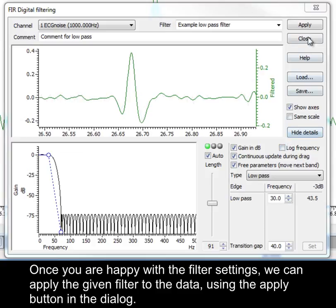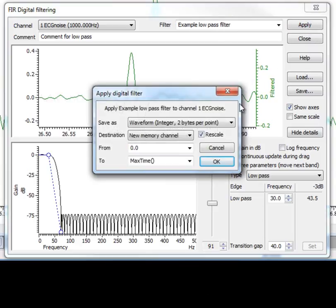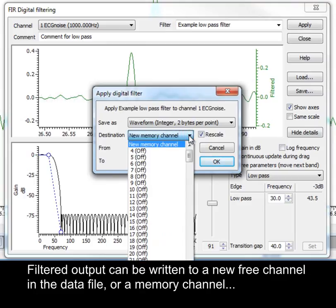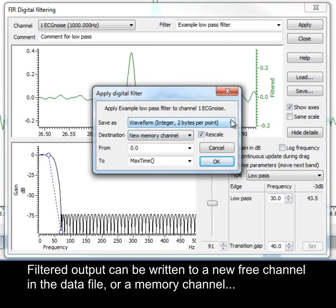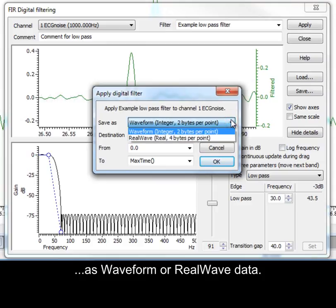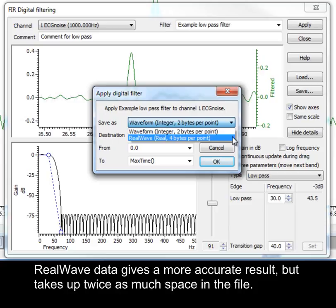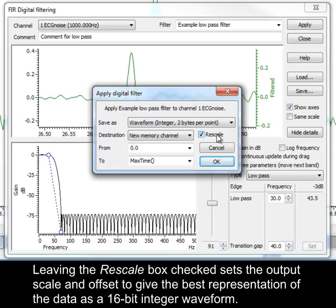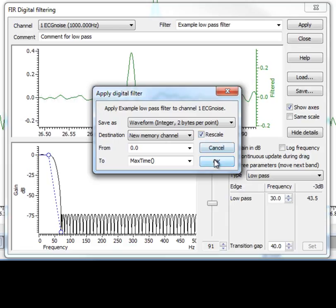Once you are happy with the filter settings, we can apply the given filter to the data, using the Apply button in the dialog. Filtered output can be written to a new, free channel in the data file, or a memory channel. As waveform or real wave data. Real wave data gives a more accurate result, but takes up twice as much space in the file. Leaving the rescale box checked sets the output scale and offset to give the best representation of the data as a 16-bit integer waveform. Clicking OK then writes the filtered output to the file.